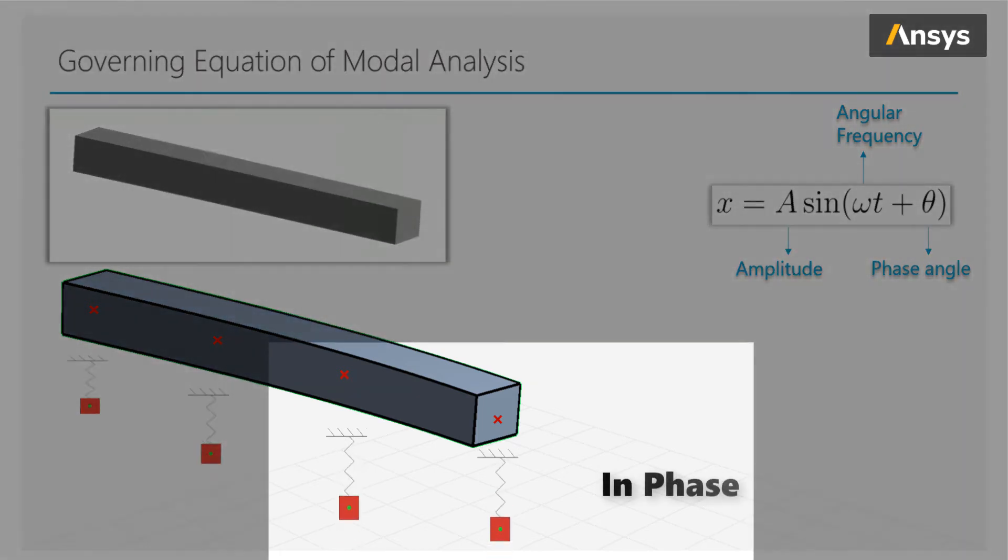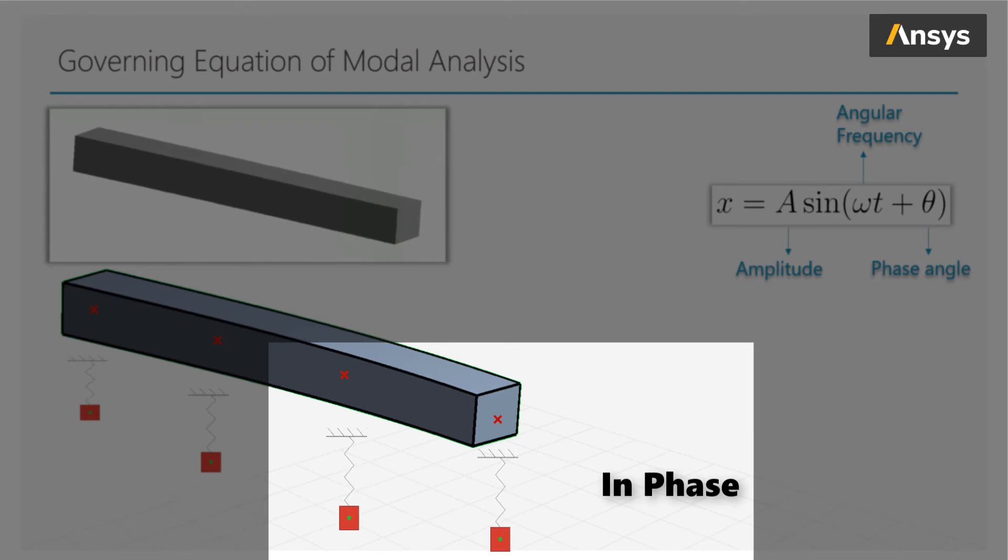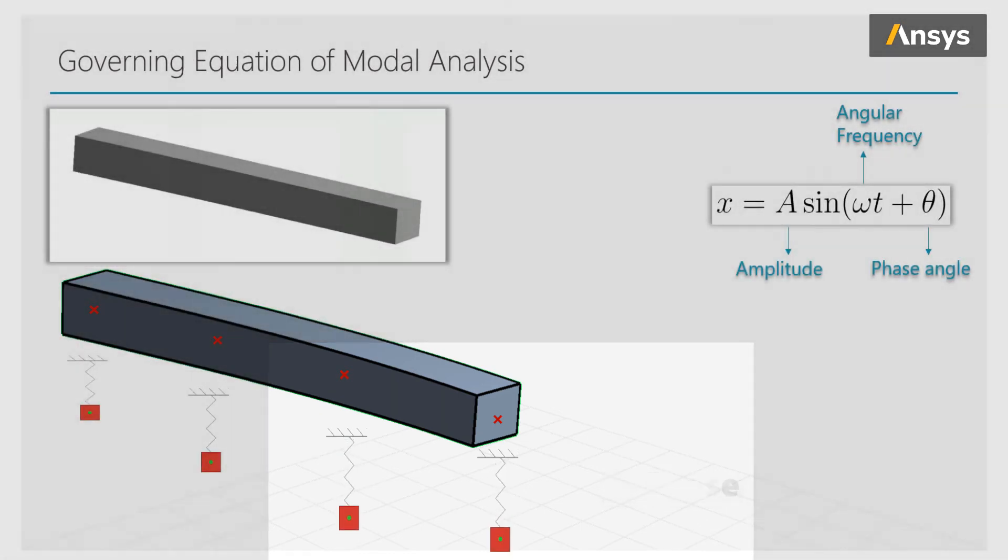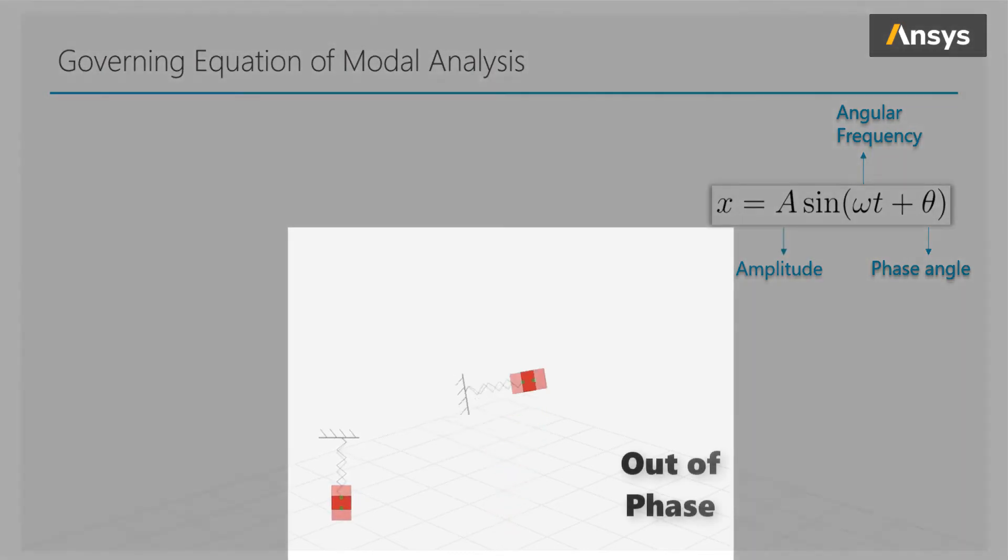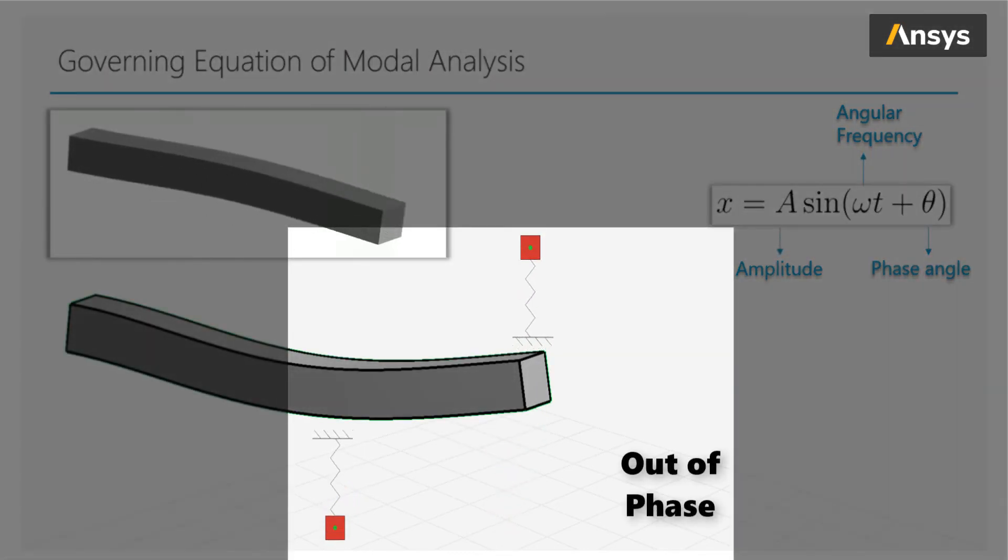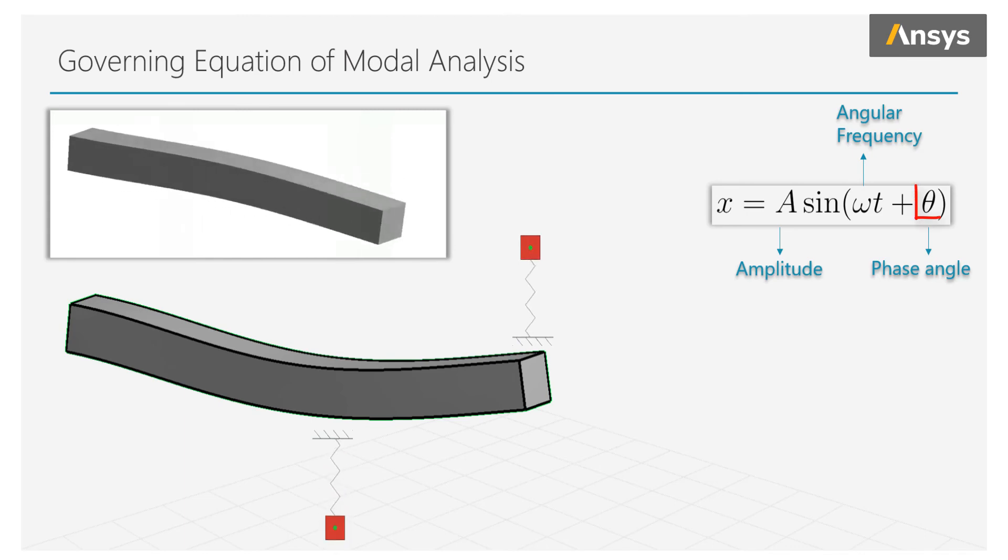Now, if two points are moving synchronized in the same direction, then we can say they are in phase. But if two points are not moving together, we can say they are out of phase, and the degree to which they are in phase or out of phase is governed by the phase angle theta.